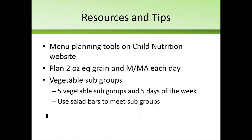Some tips when planning your menu: I recommend planning two grain and two meat every single day regardless of your grade group — that way you know you're meeting your weekly minimum. With vegetable subgroups, there are five vegetable subgroups and five days of the week, so do a quick scan to make sure all five subgroups are addressed each week. For schools with salad bars, that's a great way to meet subgroup requirements — but for those without, make sure the subgroups are being offered at the serving window.